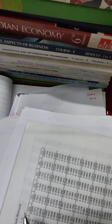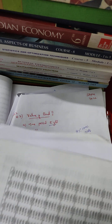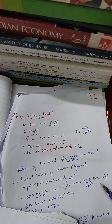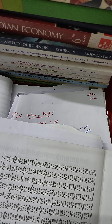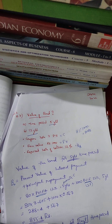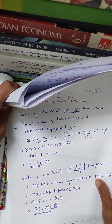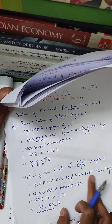The present value factor for the single future amount — the face value of 1,000 rupees — at 12% for 5 years is 0.5674. Now using the same method, we move to the 12-year time period. Value of the bond for the 12-year period.